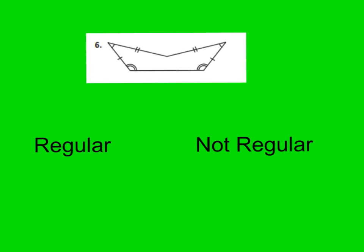For number six, go ahead and write down regular or not regular. You should be writing not regular. As you can see, the angles are not the same — this symbol shows that these two are congruent angles, but a double line shows this angle is congruent with a different angle. And the line segments are paired as congruent, but they're not all the same on all my different sides. Count them all up: one, two, three, four, five. What's a five-sided polygon called? You should be writing down pentagon.